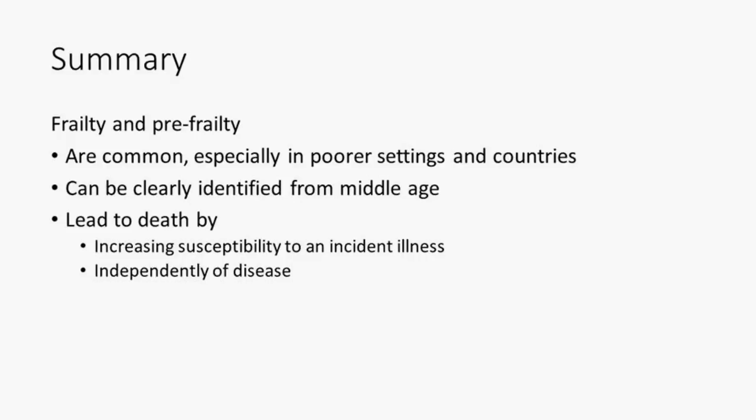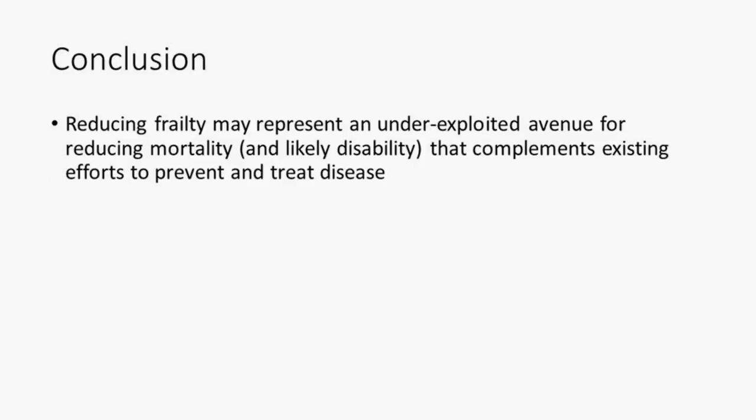To wrap up: both frailty and pre-frailty are common, and we've shown they are more common in poorer settings and lower-income countries. Frailty can be identified from middle age and has prognostic significance even from that point. Frailty leads to death by increasing susceptibility when illness develops, but also seems to potentially play a role in leading to death independent of disease. Reducing frailty may therefore be an underexploited way of reducing mortality and disability, complementing our existing efforts to prevent and treat disease.